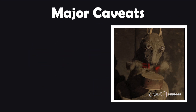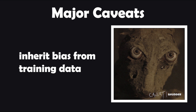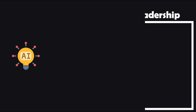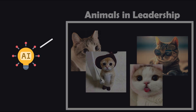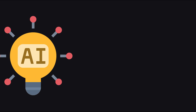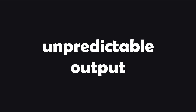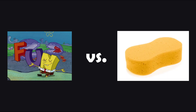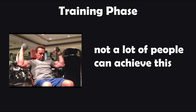Some major caveats of this training method are that a deepfake could inherit bias within the data. For example, if it is trained off images of mainly cats and leadership, it could generate deepfakes that perpetuate gender stereotypes. The generator could also produce unpredictable output, such as generating Spongebob Squarepants when all you asked for was a sponge. The training phase also requires massive amounts of data, which limits accessibility.